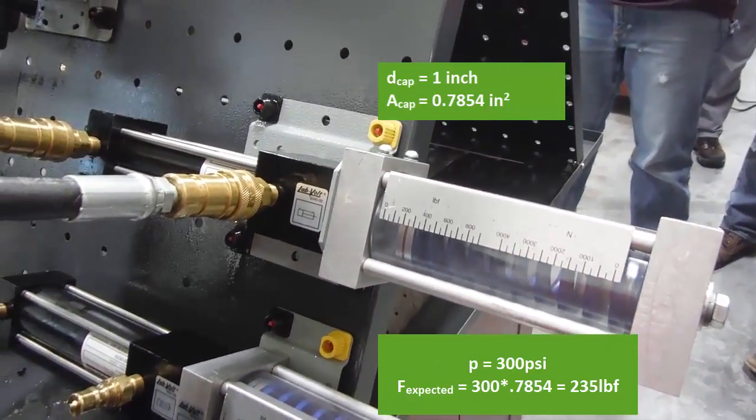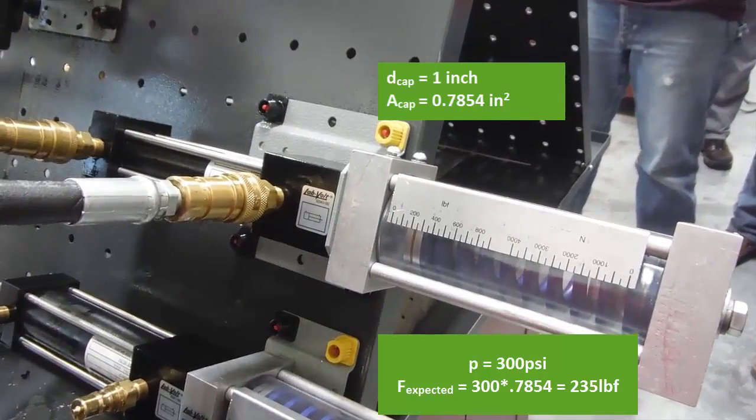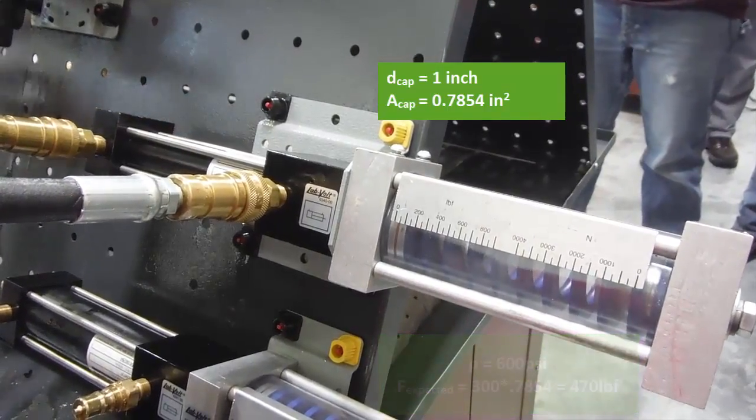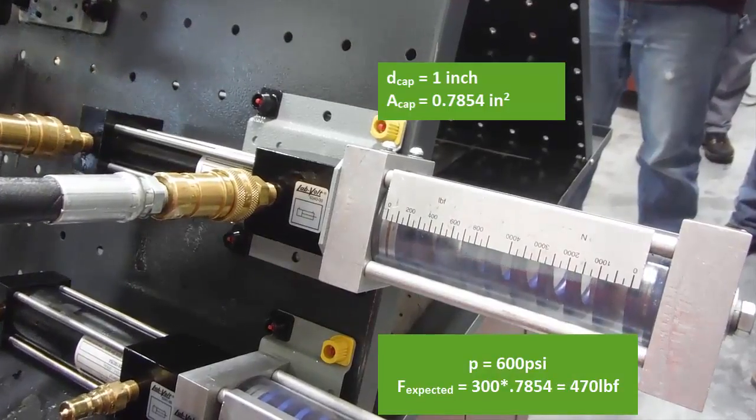So at 300 psi, we get a reading of about 220. Alright, we're going to crank that up to 600 psi.